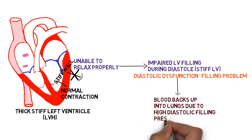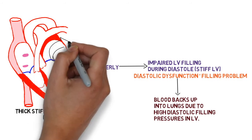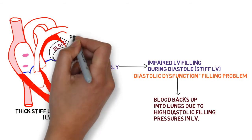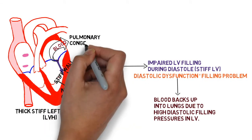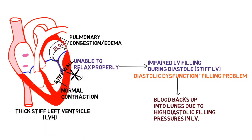If the left ventricle can't fill well, the blood will back up because it has no place else to go. It backs up into the lungs due to high diastolic filling pressures, resulting in pulmonary congestion — diastolic dysfunction causing congestive heart failure.